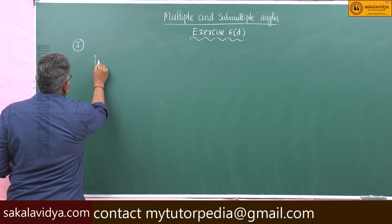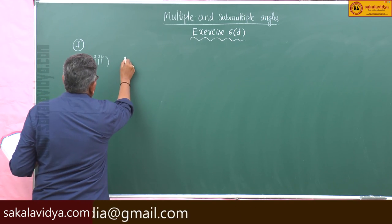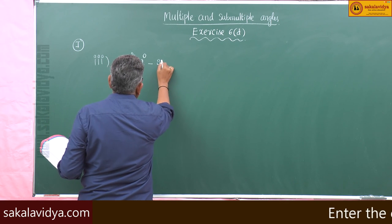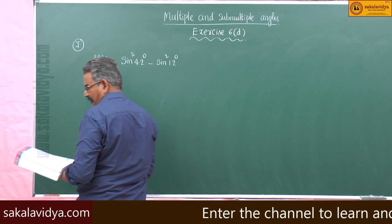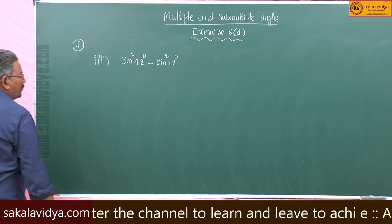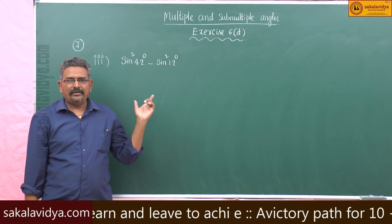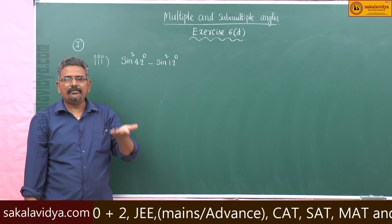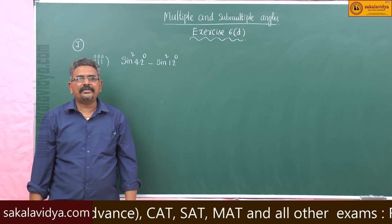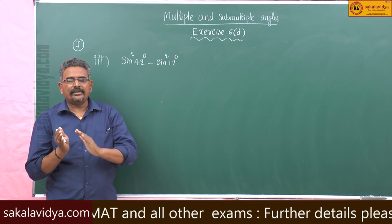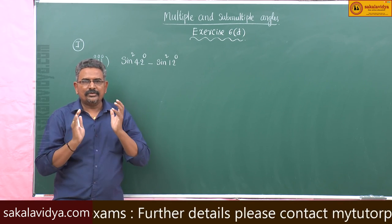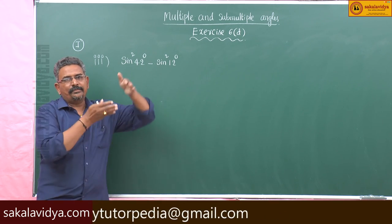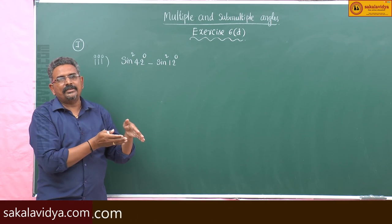Third problem: evaluate sin square 42 degrees minus sin square 12 degrees. This problem is in the form of sin² a minus sin² b. From compound angles, we have the formula sin² a minus sin² b equals sin(a + b) × sin(a - b).